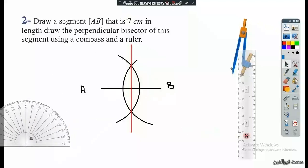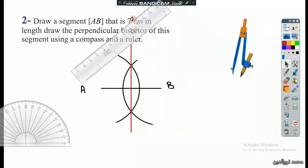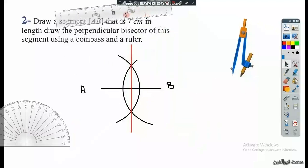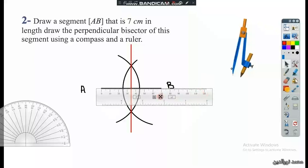And then using the ruler, each part should be 3.5 centimeters. So this part is 3.5 centimeters and the other part is also 3.5 centimeters.